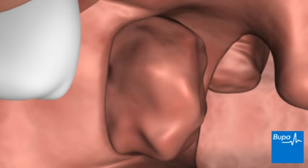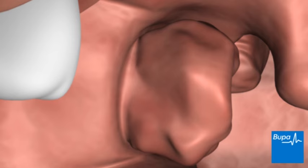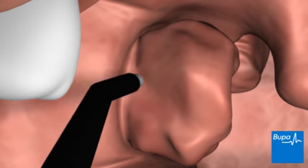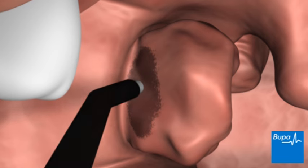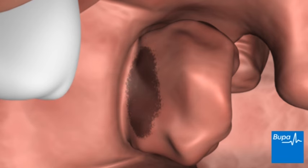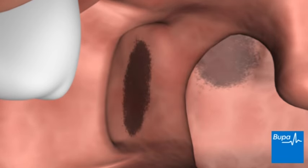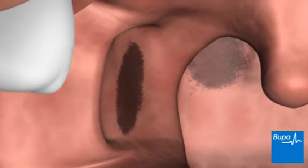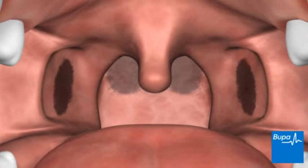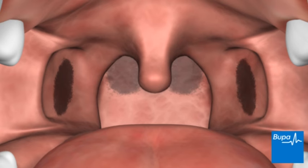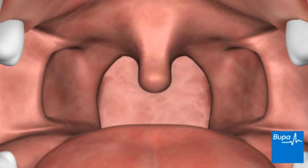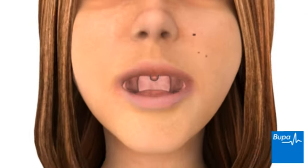Sometimes the surgeon will close the wound and stop the bleeding with dissolvable stitches. Sometimes a heated instrument is used to remove the tonsils and stop the bleeding — this method is called diathermy. There has been some question over the safety of diathermy because there is evidence that it increases the risk of bleeding after the operation. Ask your surgeon for information on this technique and other possible complications of the operation.